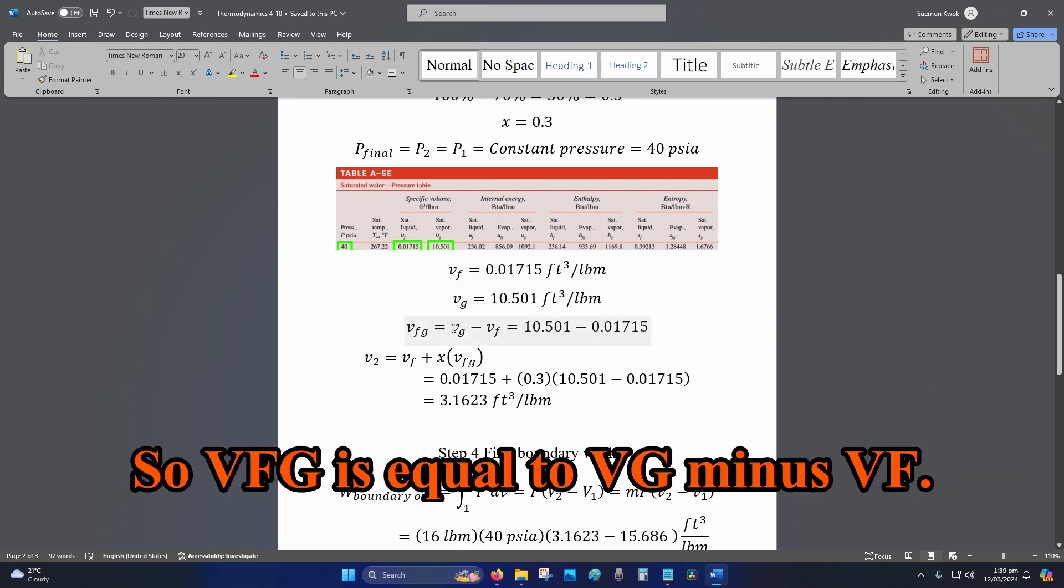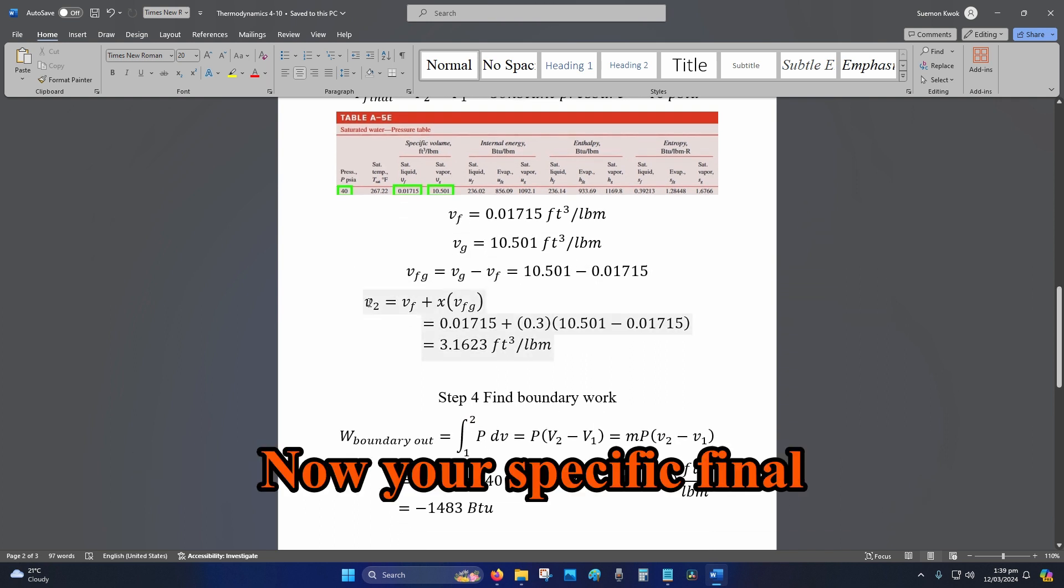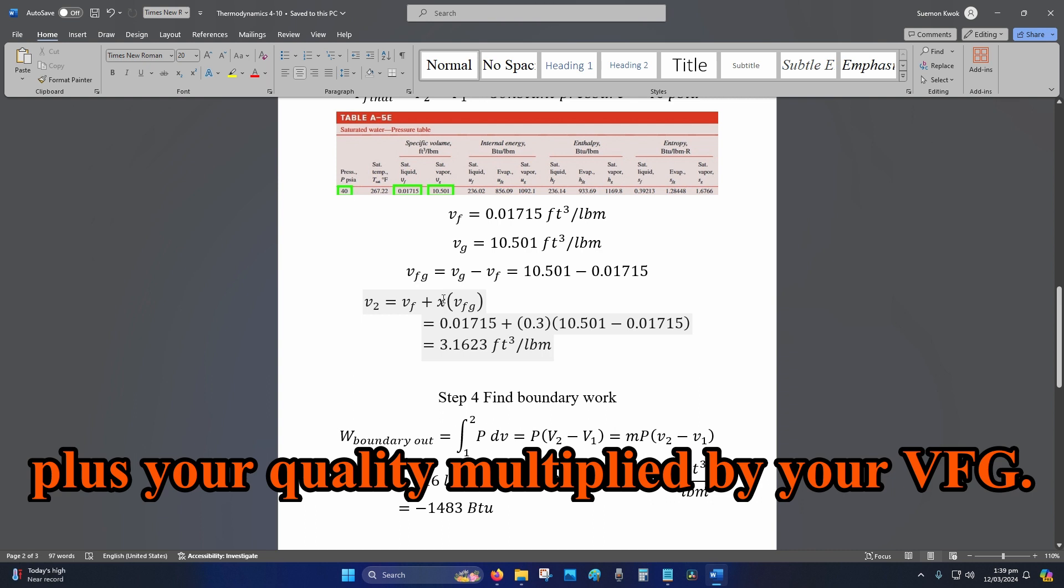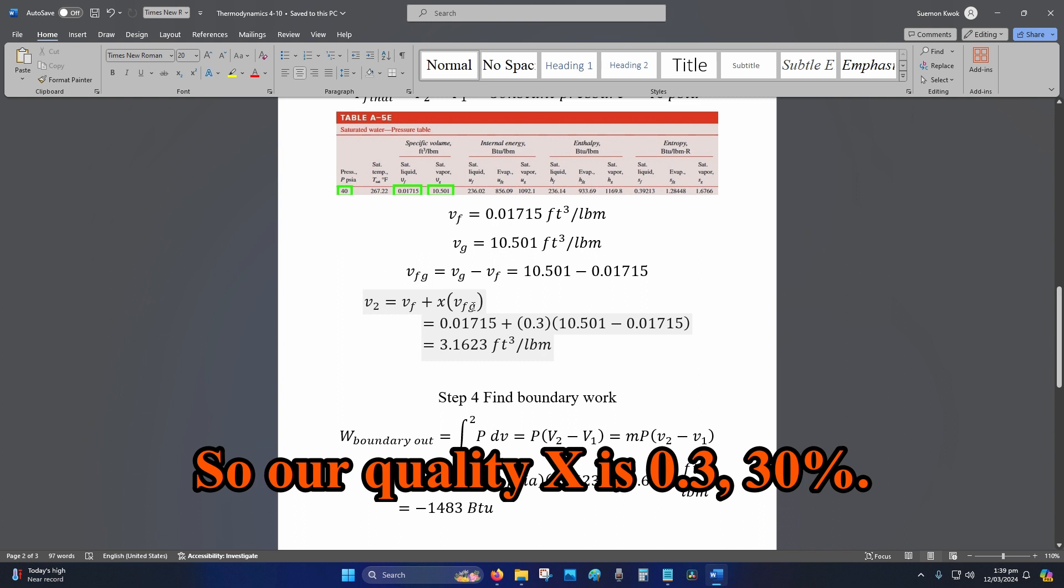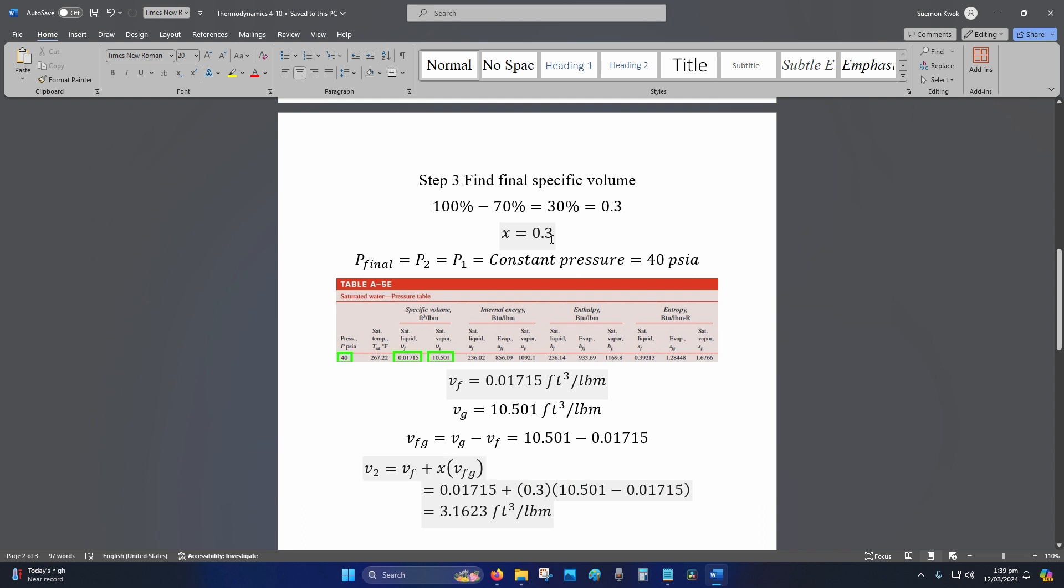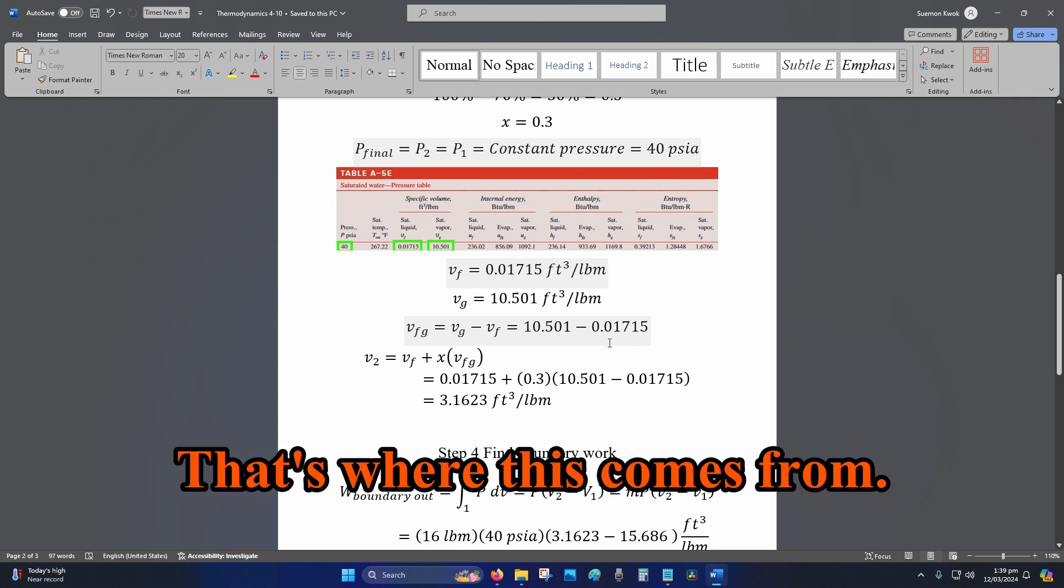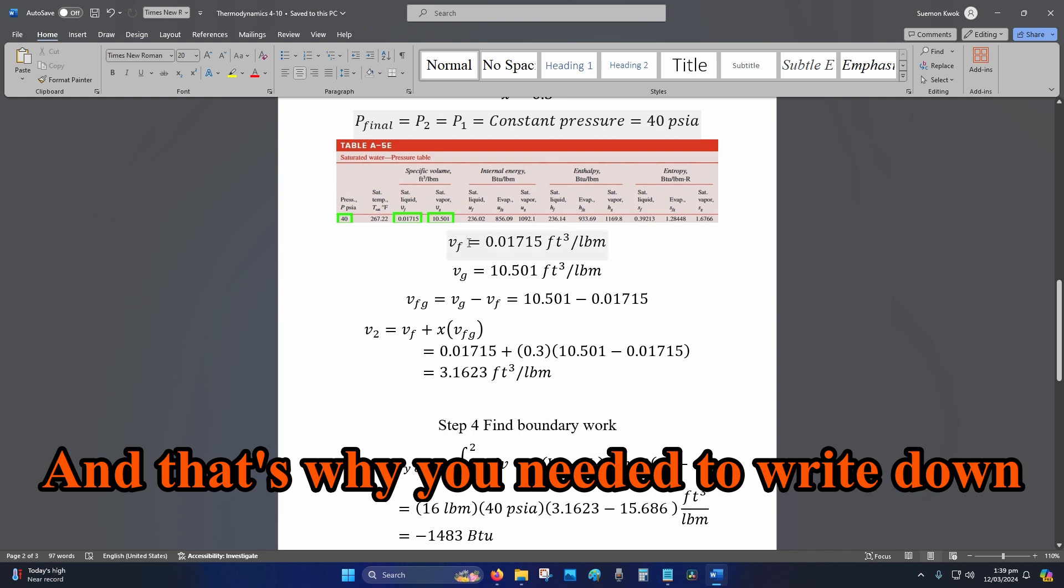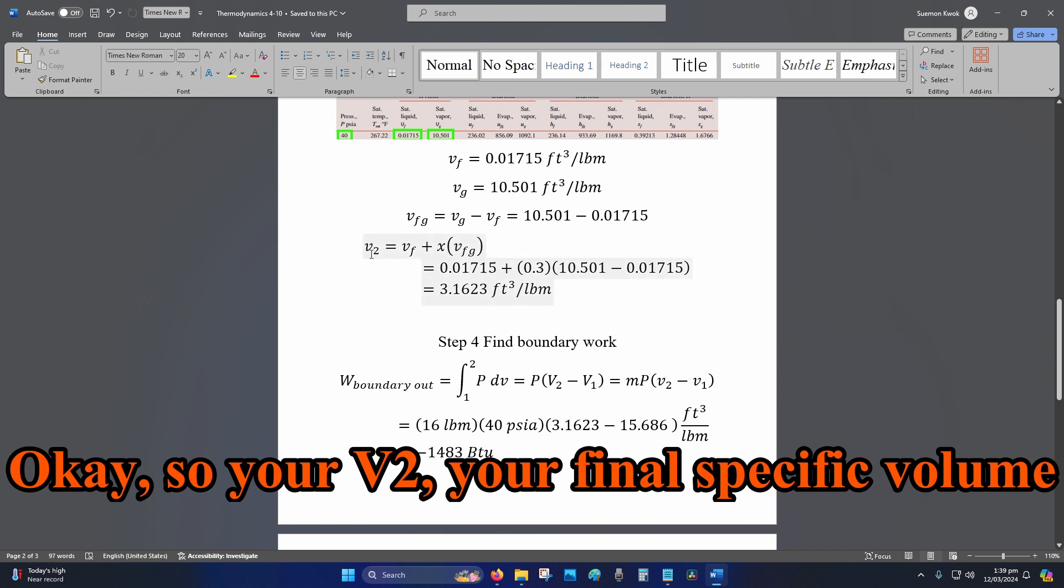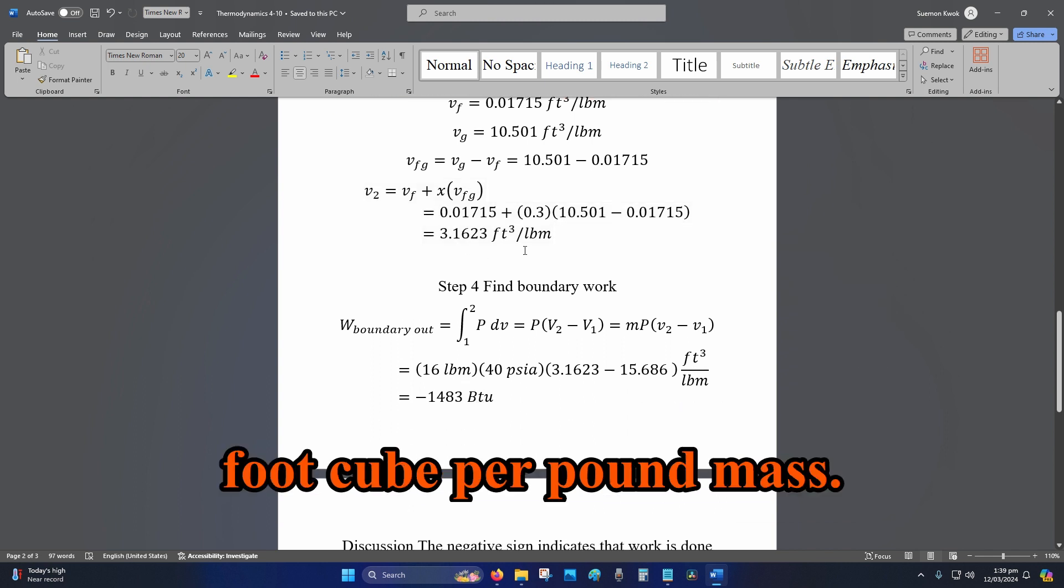So VFG is equal to VG minus VF. Now your specific final volume is equal to VF plus your quality multiplied by your VFG. So our quality X is 0.3, 30%, that's where that comes from. Our VFG is VG minus VF, that's where this comes from. And that's why you needed to write down these values before. Okay, so your V2, your final specific volume, is equal to 3.1623 foot cubed per pound mass.